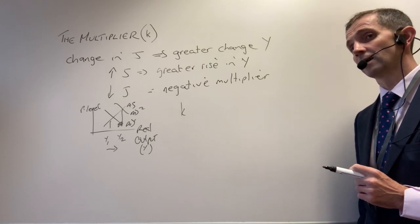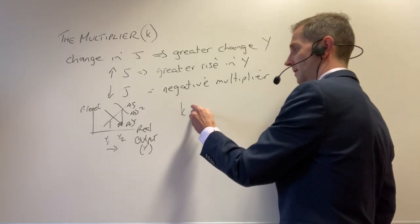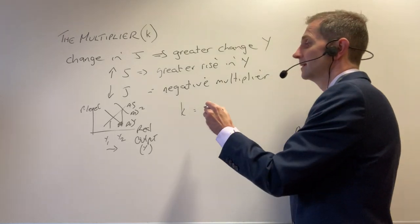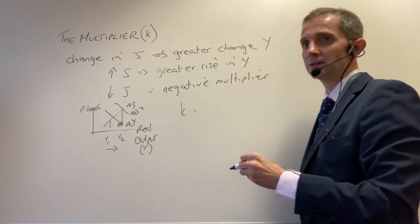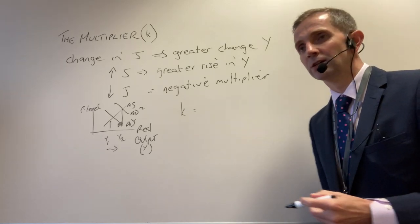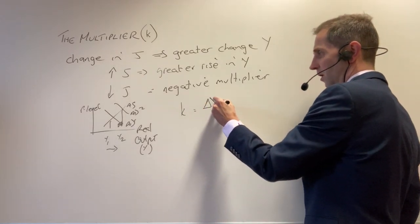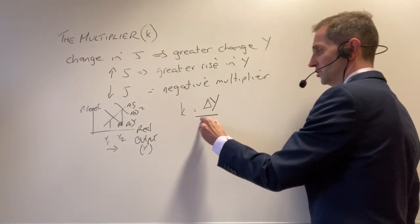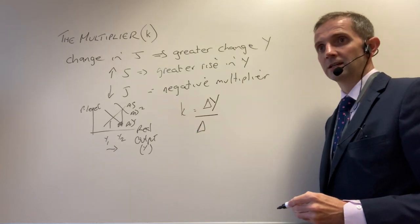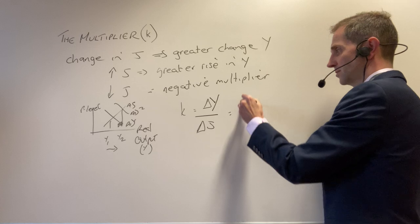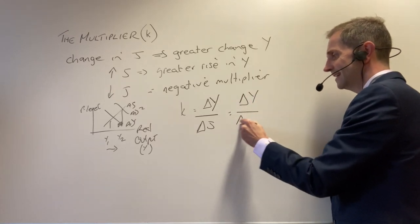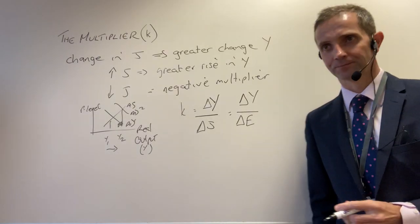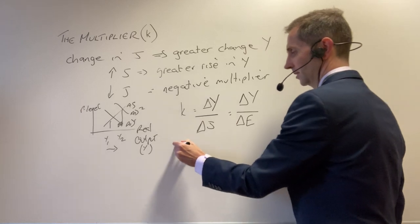Can we have a few equations to remind ourselves? The multiplier K equals the change in Y (delta Y, the change in national income) divided by the change in the injection — or sometimes you might see it as delta Y over delta E (change in expenditure). That's one way of calculating it. Another way, with reference to MPC: K is equal to 1 over 1 minus MPC.